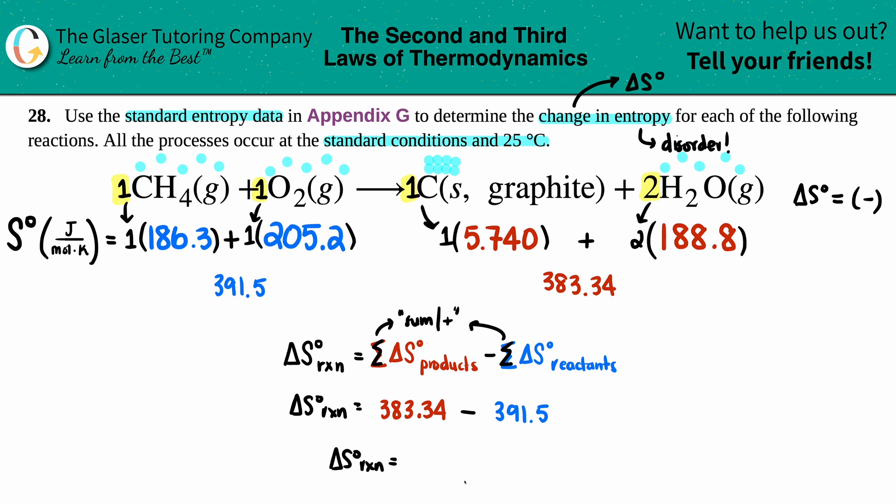Delta S for the whole reaction is this minus the 391.5 and for sig fig purposes, I have only one sig fig decimal here. So that's what I'm allowed. So it would be negative 8.2. Really, really close. So it's very close to zero, but it's still a negative value. You lost entropy. Joules per mole times Kelvin is the unit. And that is the answer.